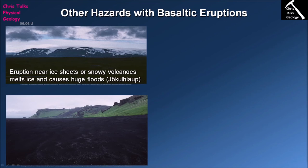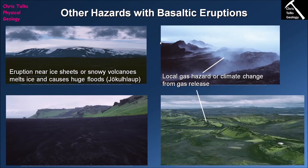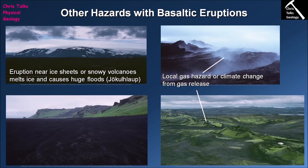The other risk from a basaltic eruption is due to gases. Although basaltic lavas tend to have a lower volatile content, they do still have volatiles associated with them. If you walk into an area where volcanic gases are being given off by a volcano, you are at risk of suffocating or having an asthma attack. So at a personal level, walking onto the slopes of an active basaltic volcano does carry a risk from the gases that volcano will release.